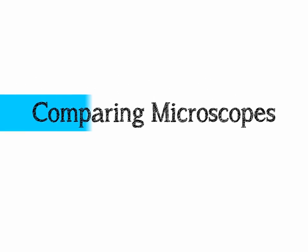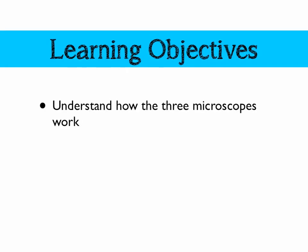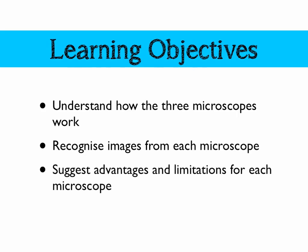In this video, we're going to be looking at a couple of different kinds of microscopes: the light microscope, the scanning electron microscope, and the transmission electron microscope. Our learning objectives for today are to understand how the three microscopes work, to recognise images from each microscope, and to suggest the advantages and limitations for each of those three microscopes.